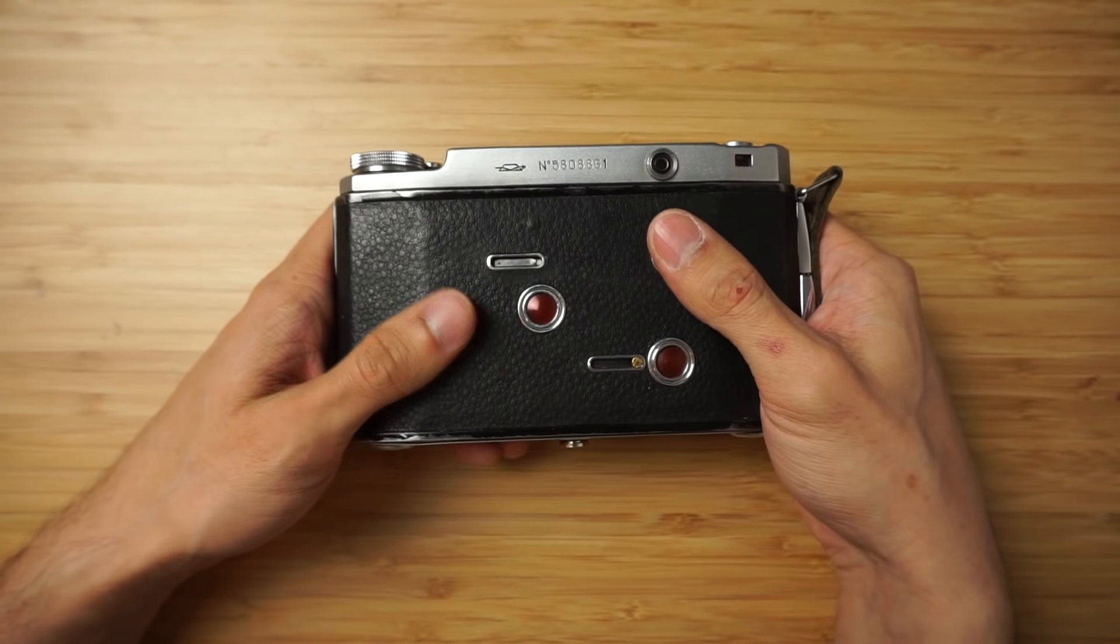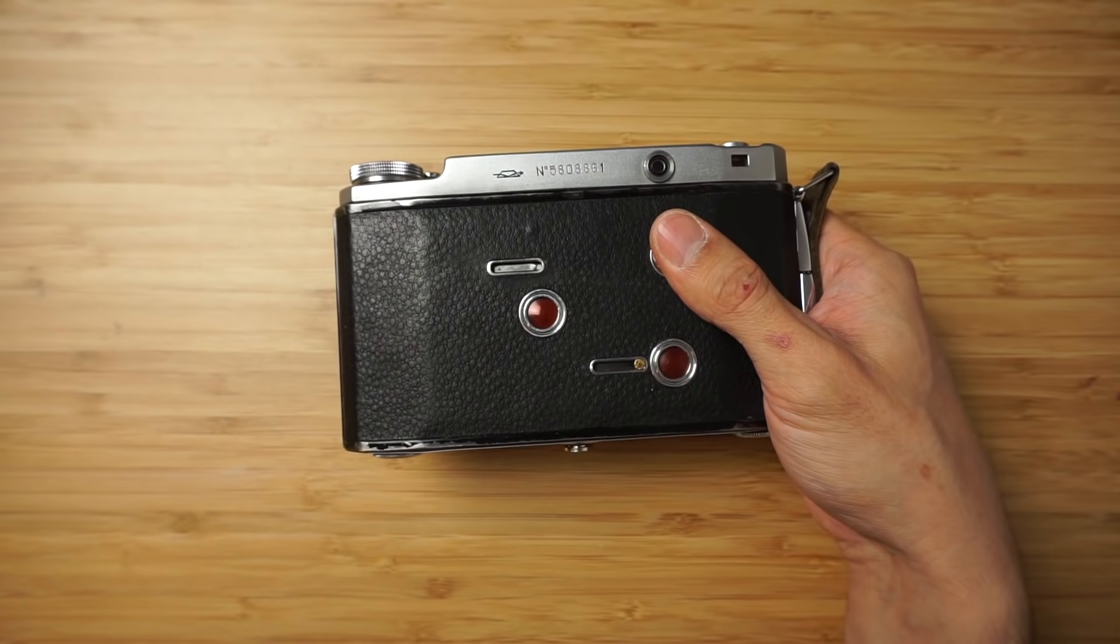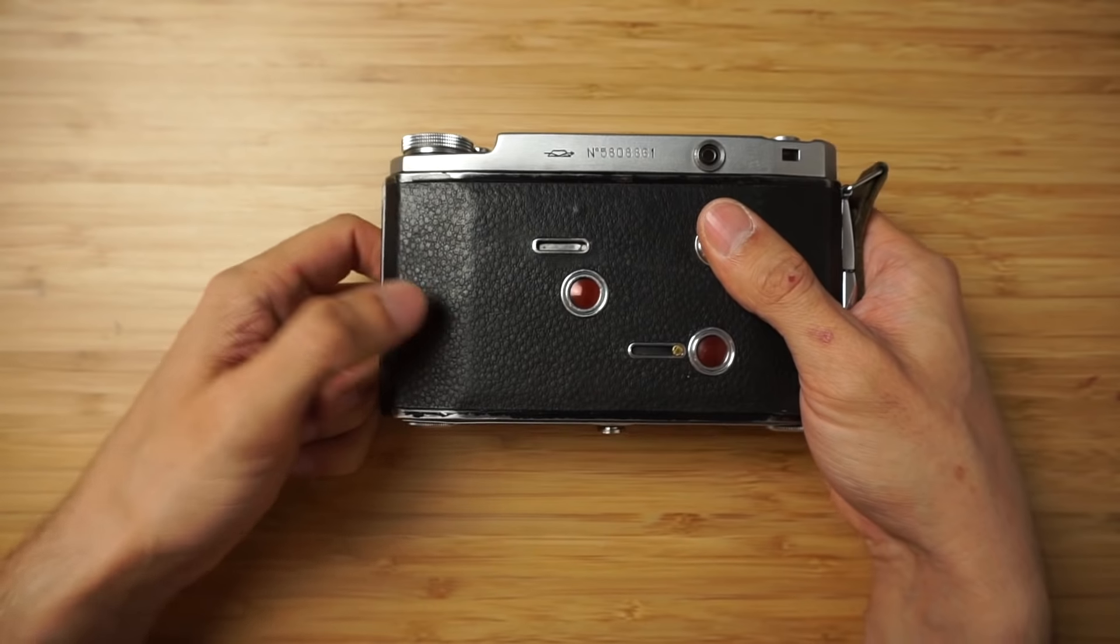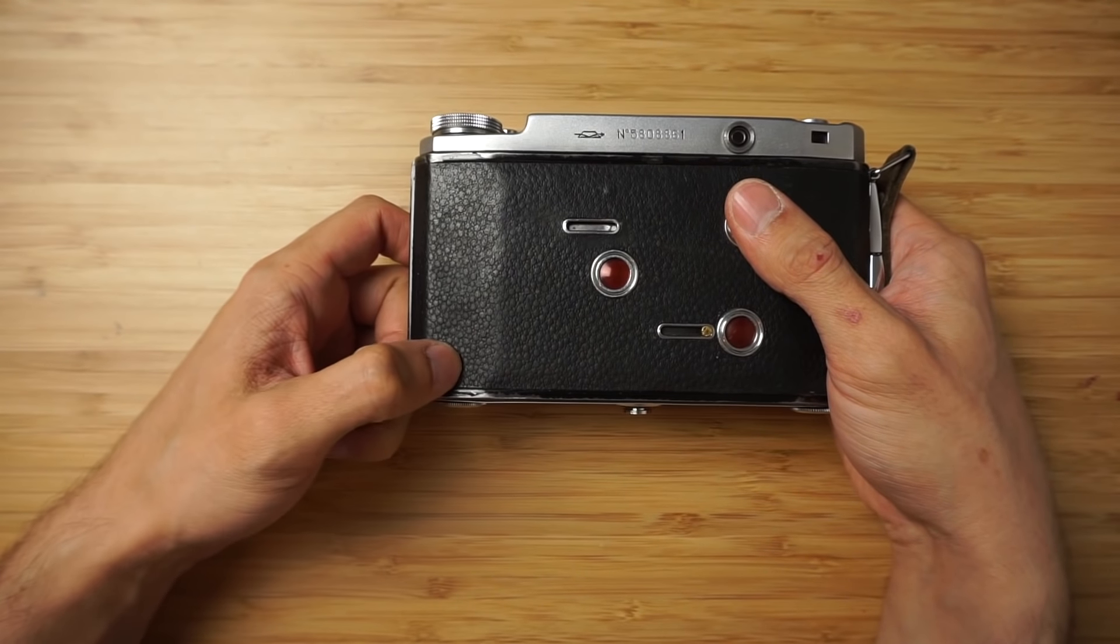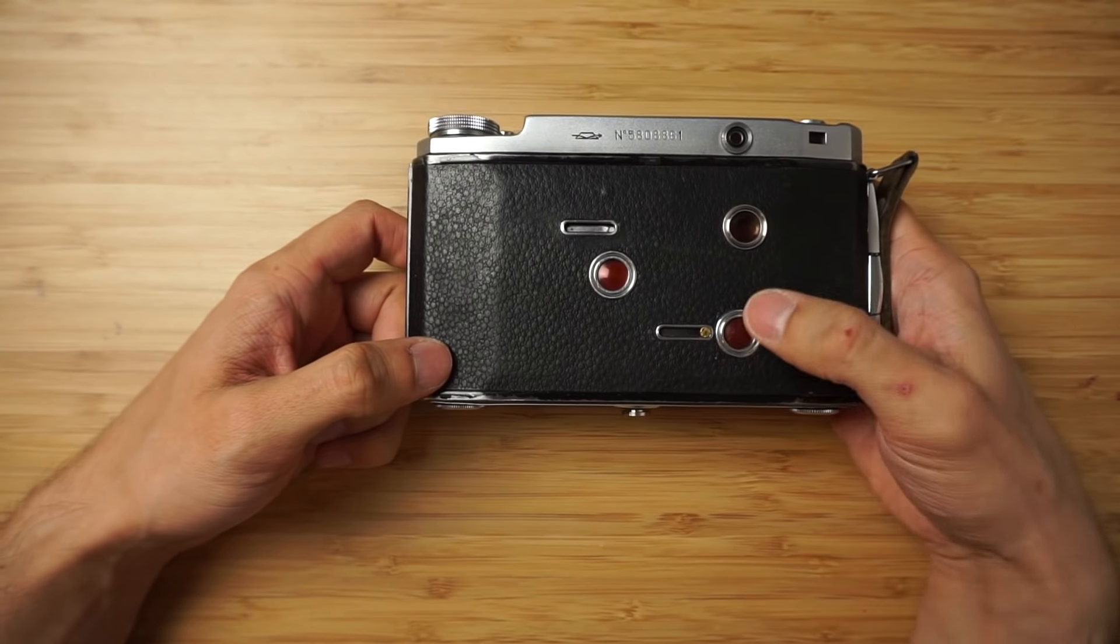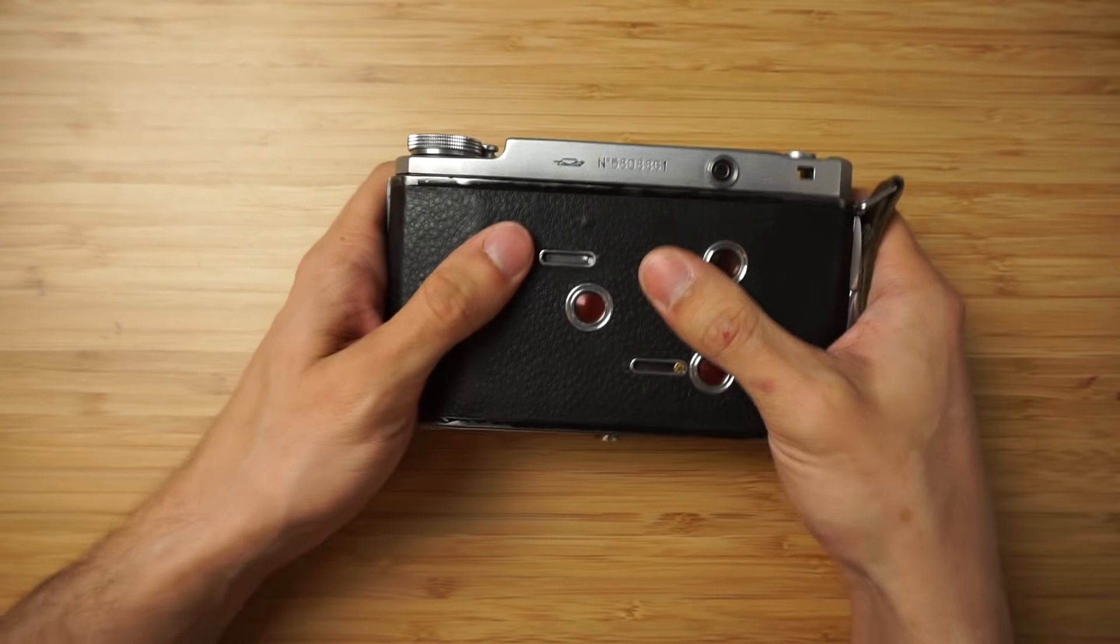If you put this Frankenstein roll in your TLR or some other automatic camera that measures thickness of the film on the taking spool, the camera will miscount frames. With this camera you should not have any problems because you are the person in control of the frame.